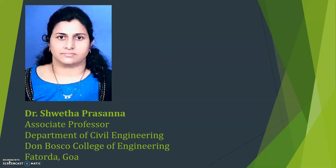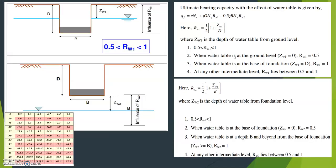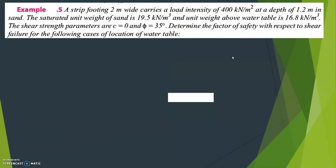Hello, my dear students. Let us take one more example on safe bearing capacity of soil. In this example, a strip footing 2 meters wide carries a load intensity of 400 kilonewton per meter square.